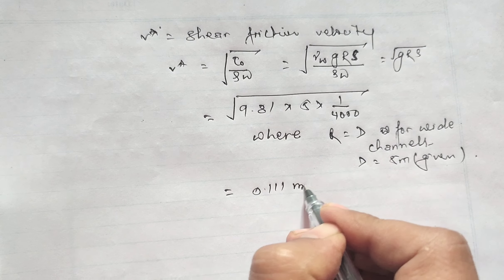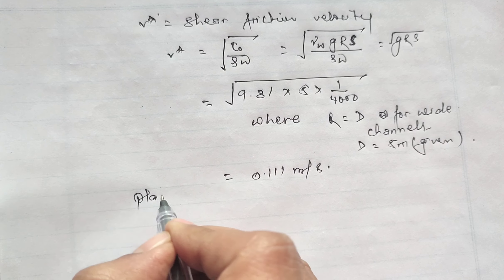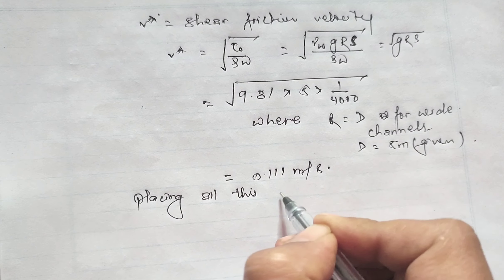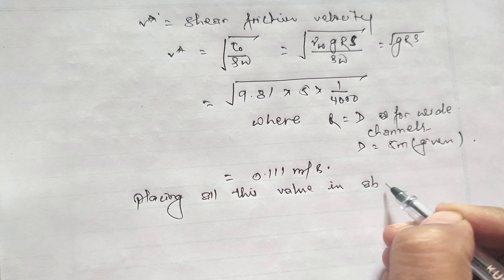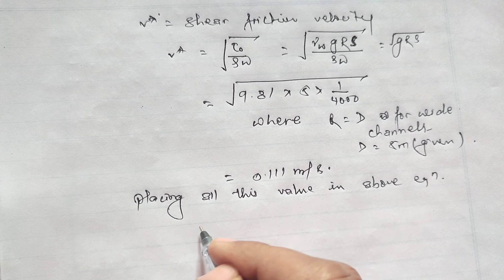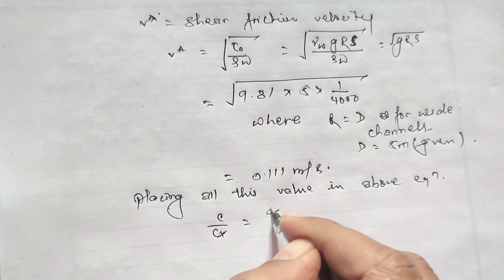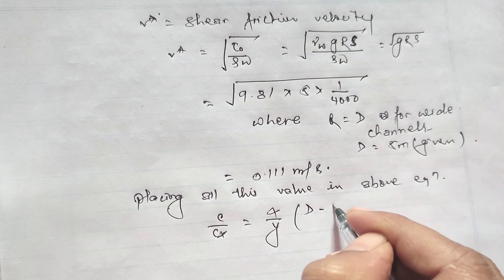Now placing all this value in our equation, that is Rouse equation: c/c_α equals [α/y × (d-y)/(d-α)]^z.